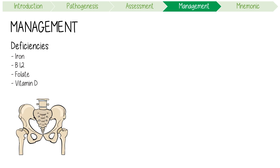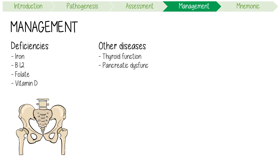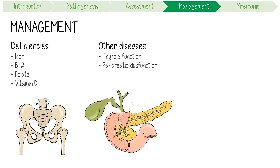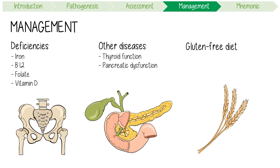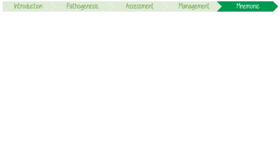Second, screen for other diseases and watch out for complications. Test thyroid function, as celiac disease is associated with autoimmune thyroid diseases. Pancreatic complications are also something to be aware of. Finally, encourage the patient to start a completely gluten-free diet. Even a small amount of gluten causes tissue damage in the small bowel, and gluten should be avoided regardless of the presence or absence of symptoms.